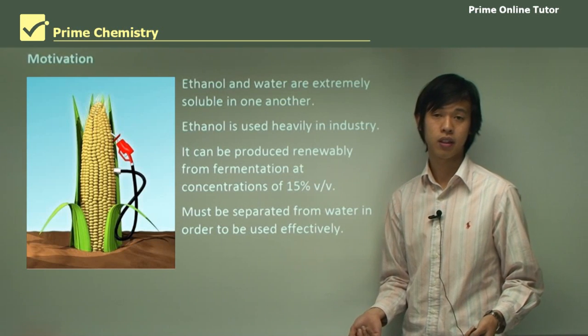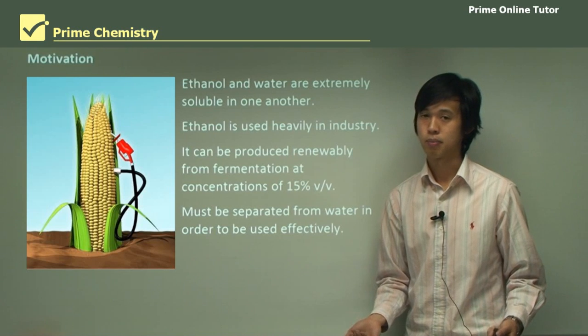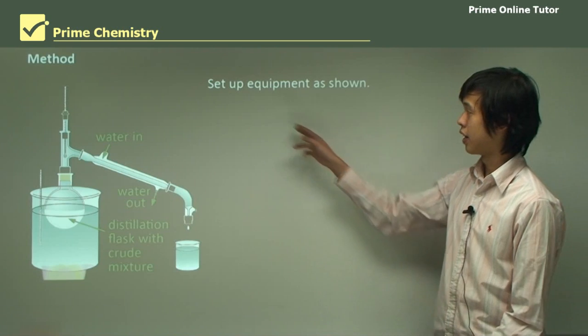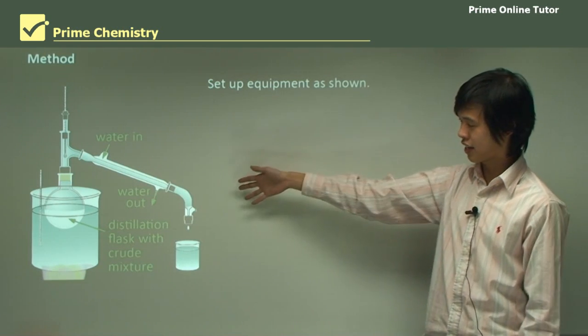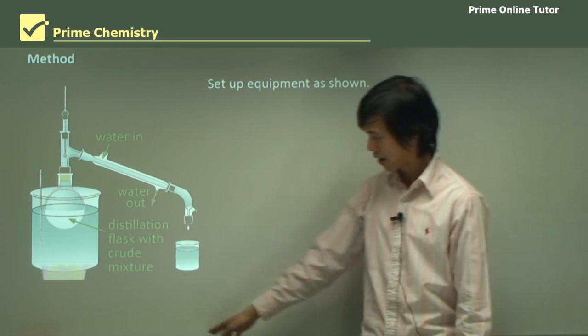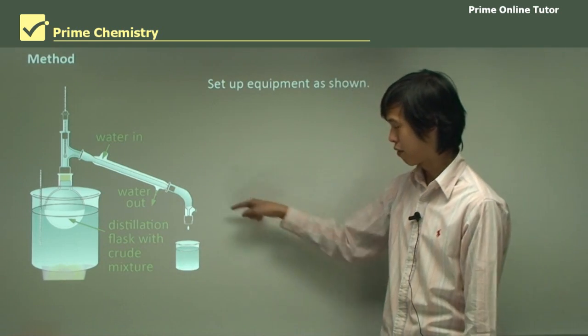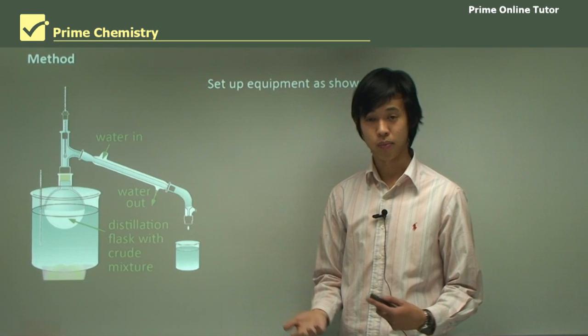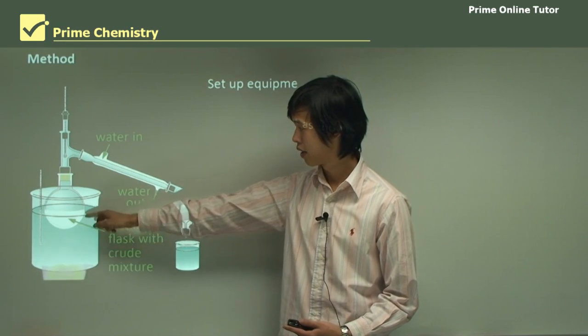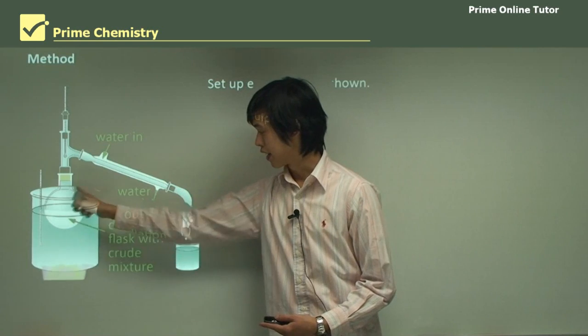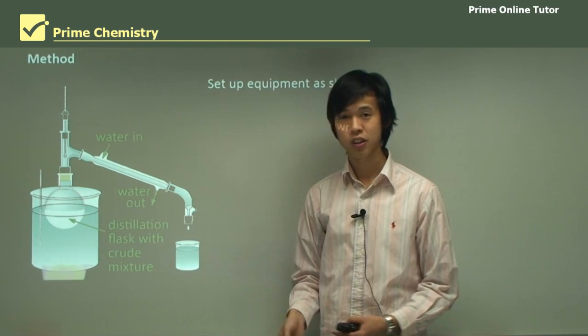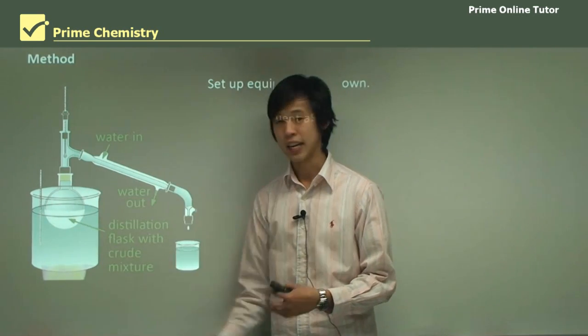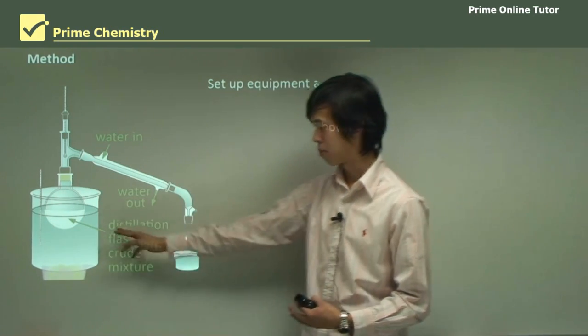So that's why we need to separate it. In many other applications we need pure ethanol as well. So there's many reasons to separate this. So what we do, we set up the equipment as shown here. We've got our Bunsen burner down the bottom there and we've got a water bath going here and we'll talk about why we need that a little bit later on.